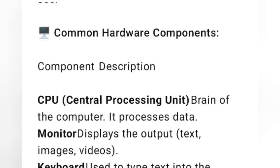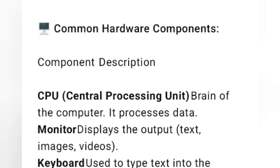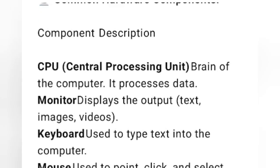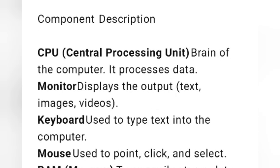Common hardware components: CPU, or central processing unit, which is called the brain of the computer — it processes data. Then monitor, which displays the output like text, images, and videos.